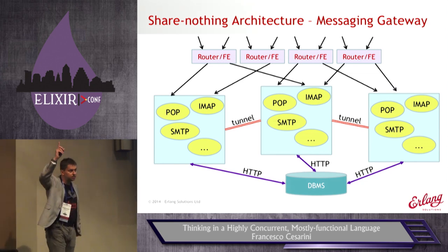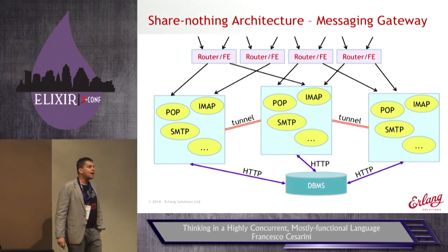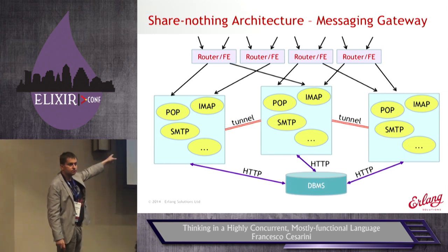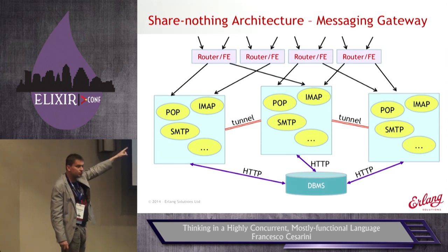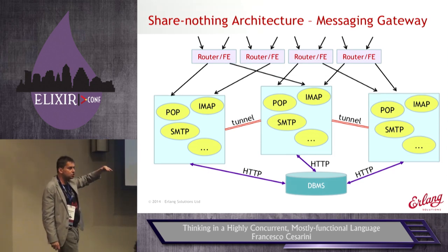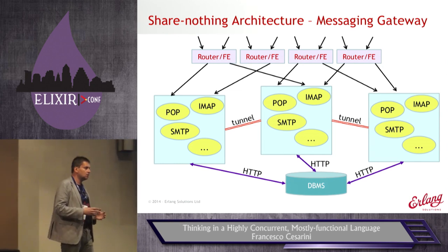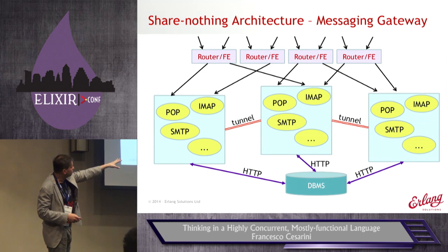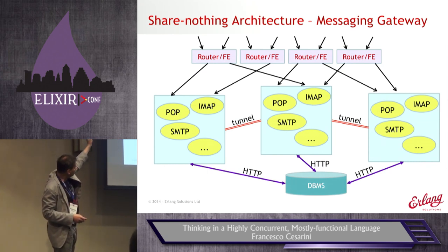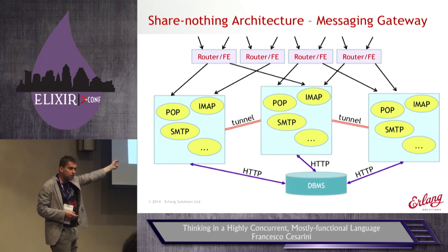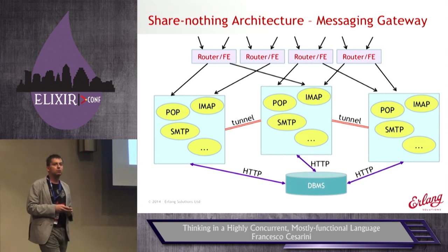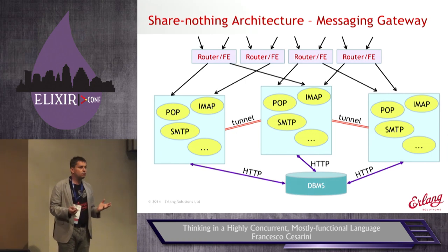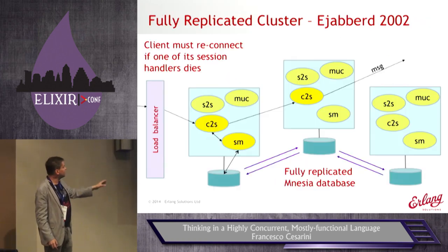If we lost a back-end node, requests from front-end nodes were routed to one of the two other nodes using two-level hashing, so we wouldn't rehash all requests. The session record was still stored in the distributed table — look it up and handle it. With this architecture we removed the single points of failure we had in the 2002 architectures.